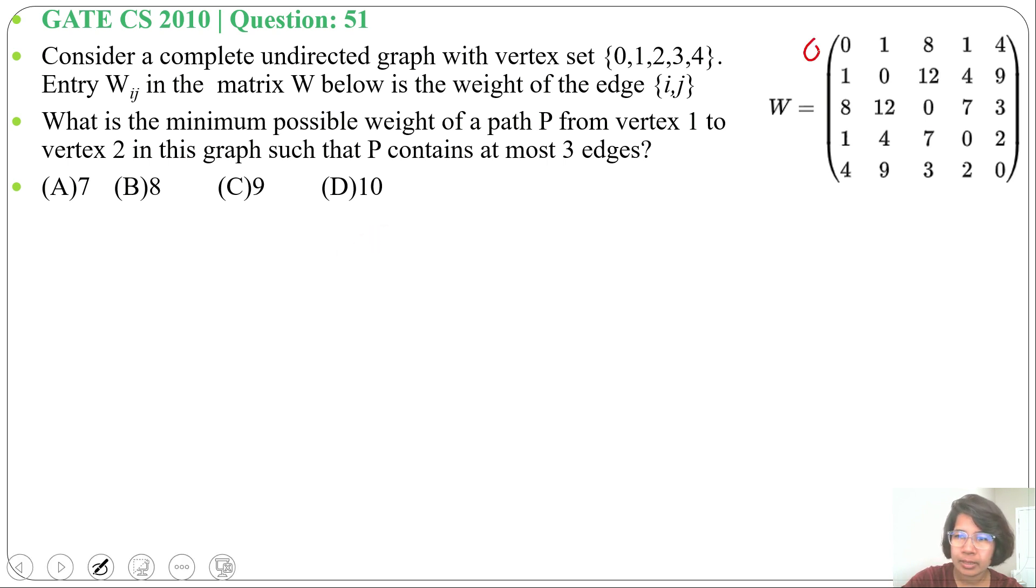There are five vertices 0, 1, 2, 3, 4. If we are not getting this weighted matrix, let me construct the graph.